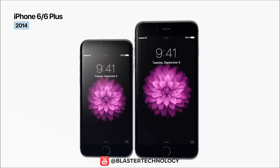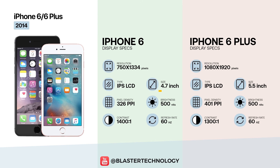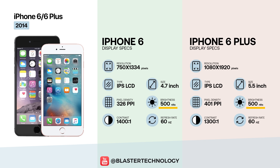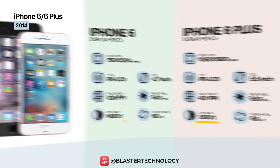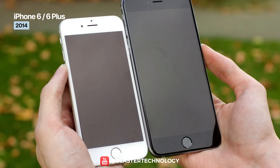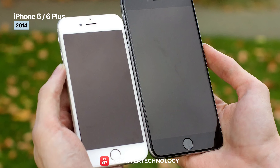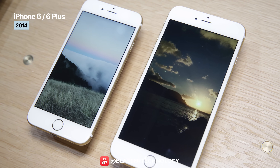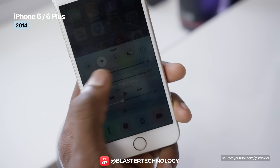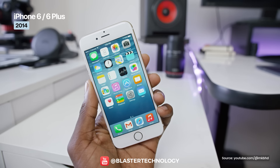The iPhone 6 generation arrives in two sizes — 4.7 inches and 5.5 inches — delivering higher resolutions and more pixels on the Plus model. Brightness stays around 500 nits, while contrast improves to 1400 to 1 on the iPhone 6 and 1300 to 1 on the 6 Plus. The Retina HD display is protected by ion-strengthened glass and an oleophobic coating. These screens are larger, brighter, and offer better overall color accuracy.